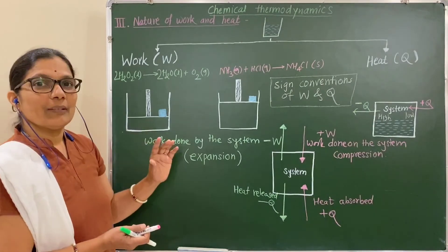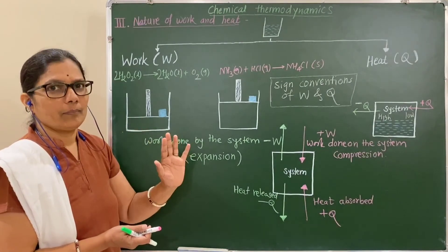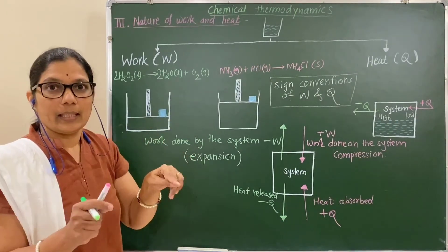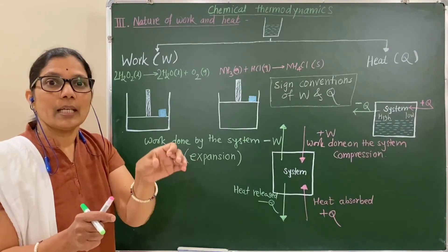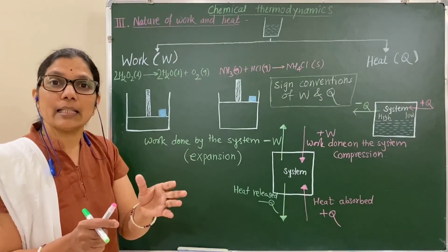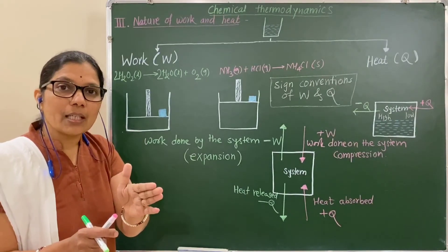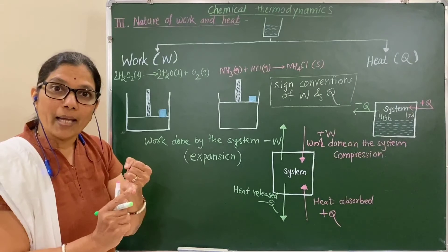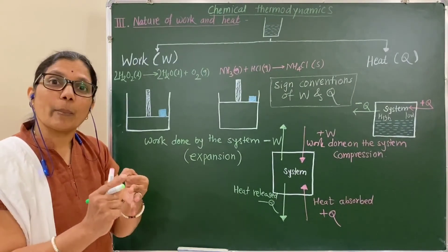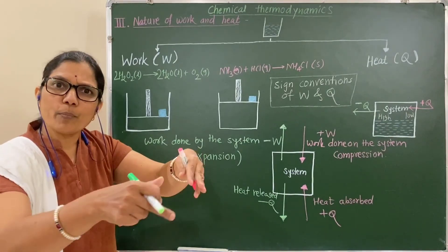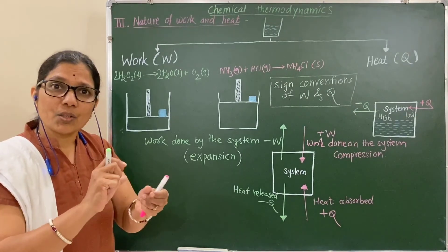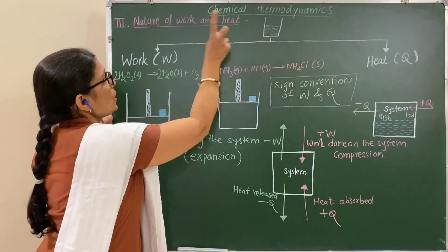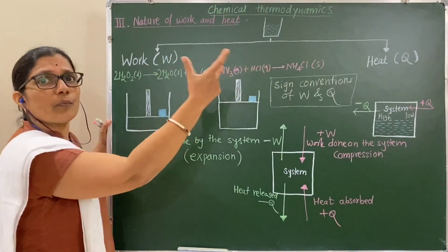Now one analogy: this system has energy, similar to a bank. The bank is the system, and our money in the bank is the energy. That energy can be exchanged — given out or taken in — in different ways or modes: by cheque, by demand draft (DD), or by digital cash. All are different forms of money. Similarly, energy is exchanged in the form of work or heat — both are different forms of energy.